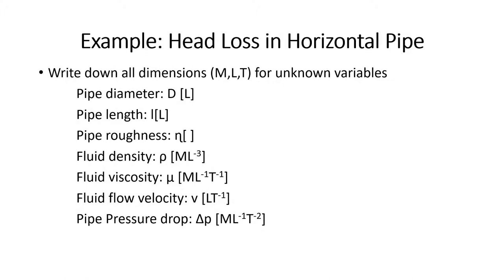I mentioned I developed an equation to describe a chemical mixer and it became a company trade secret. As a consulting engineer, I sign non-disclosure agreements at every plant, so I can't share specific work. Instead, I'll give you an example of head loss in a horizontal pipe — that's well established. If you learn this, you can apply the Buckingham Pi method to anything, so just bear with me.